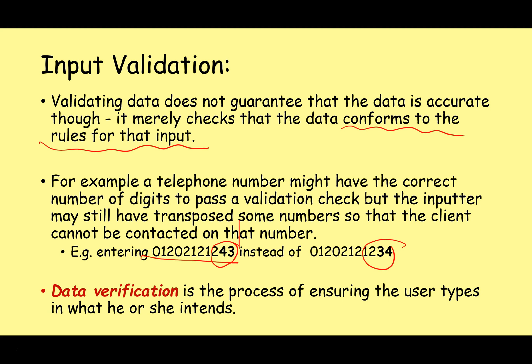If you're looking to ensure accuracy, this is what we call data verification — the process of ensuring that the user types in what he or she intends. Data verification might involve asking the user to enter important information like a password or email address twice, then checking that both entries are the same. For something like an email address, you could also send the user a verification email they have to click on, proving it's a real valid address before they can log on to the system for the first time. Data validation does not equal data verification.